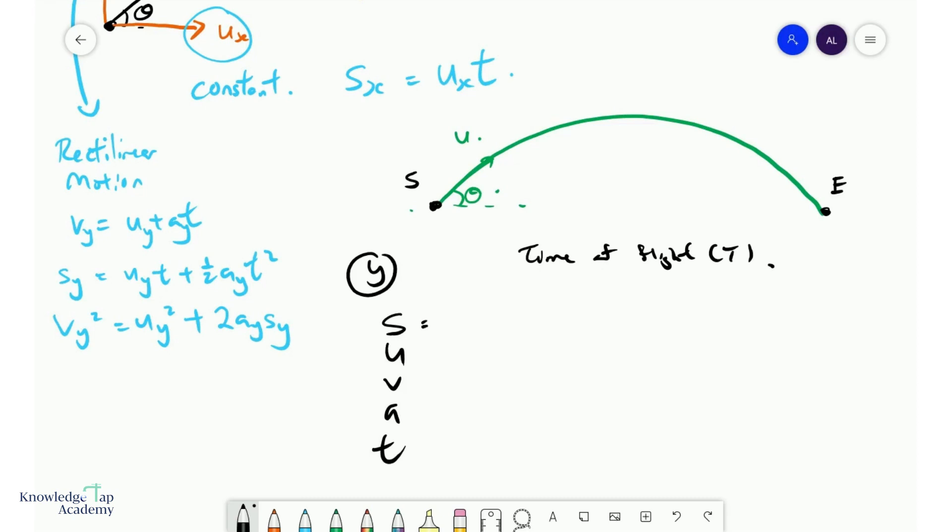Now, what is the vertical displacement from here to here, from start to end? Well, it's zero. You're at the same vertical height. Uy we've seen is u sine theta. And remember, if I'm looking at the same vertical height at the end, then that will be negative u sine theta. And so my v is negative u sine theta. A is minus g. And t is what we're trying to find.